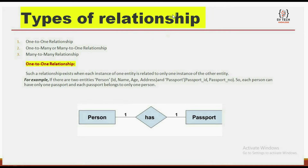Types of relationship, or we can call it cardinality of relationship. We have mainly three types of relationships: one-to-one relationship, one-to-many or many-to-one relationship, and many-to-many relationship. We will discuss each one briefly.